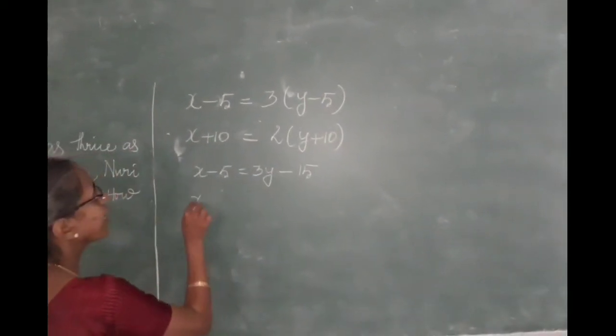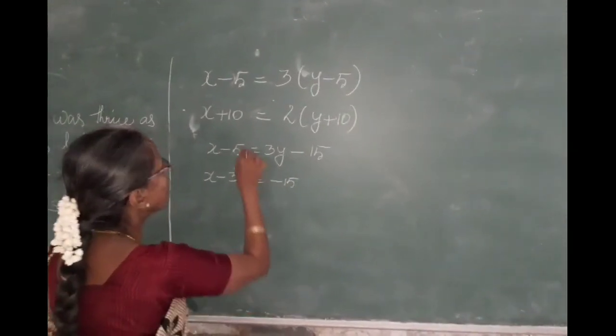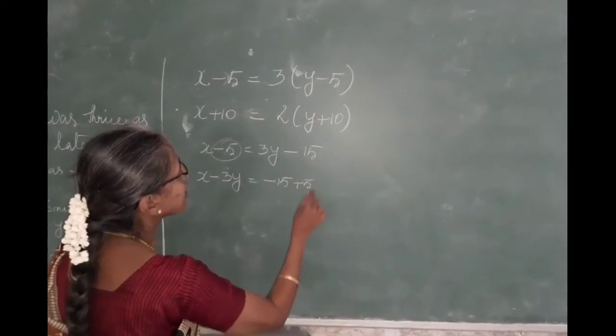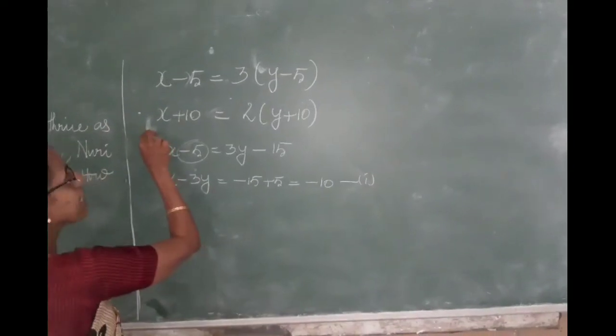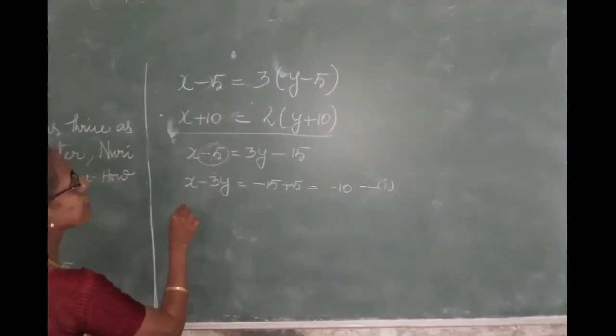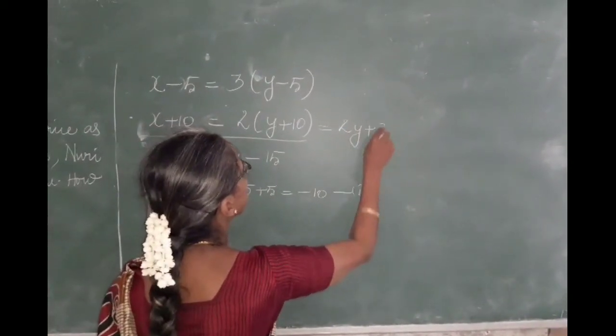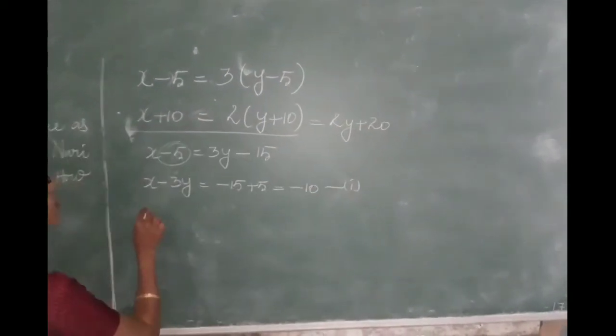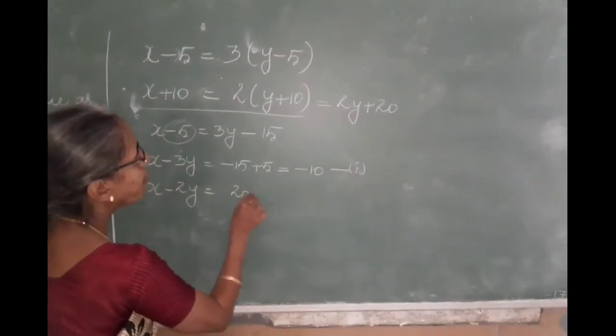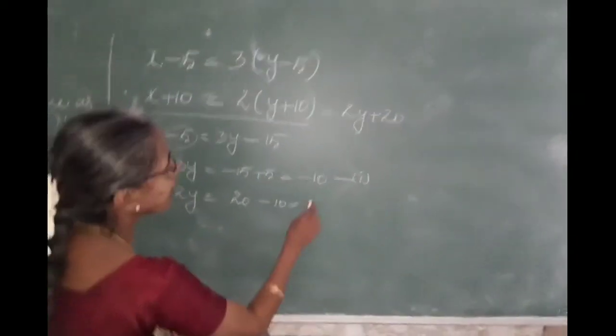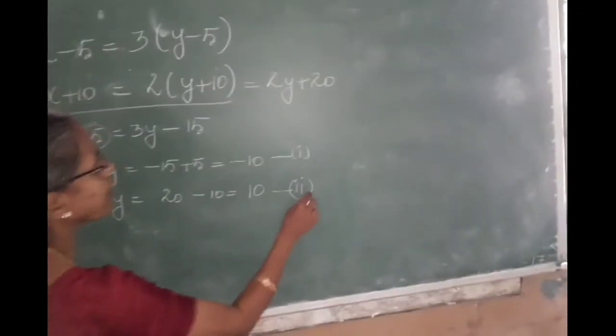Now you can find out. x minus 5 equal to 3y minus 15. Or, bring the variables to one side: x minus 3y will be equal to minus 15 plus 5, which is minus 10. Mark this as first. Second one, x plus 10 equals 2y plus 20. So x minus 2y will be equal to 20 minus 10, which is 10. This is your first equation, this is your second equation.